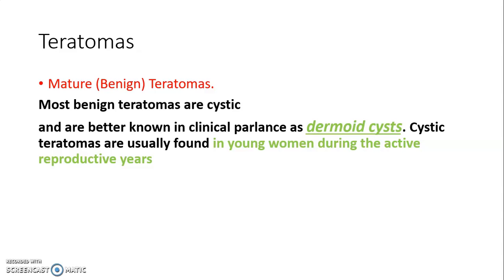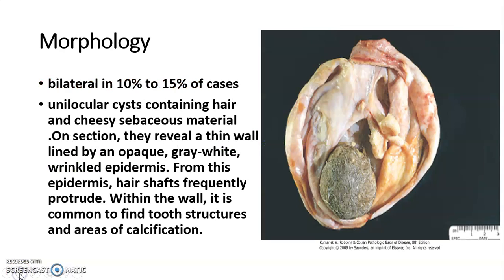Teratomas are ovarian germ cell tumors. Mature teratomas are benign, and benign teratomas are mostly cystic, also known as dermoid cysts. They occur in young women during active reproductive years.